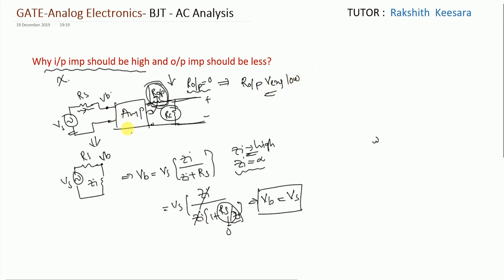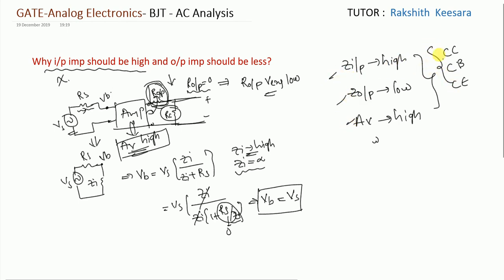And while coming to amplifier, voltage gain should be high. This is the main condition for amplifier. Now tell me guys, input impedance should be very high. Output impedance should be, this is also called as driving capacity, output impedance should be low. Voltage gain should be high. Now what I will do is, I will write these three parameters for CE amplifier, CB amplifier and CC amplifier. And we will compare these three parameters for these three amplifiers, and we will decide which amplifier is the best. But in the next video.